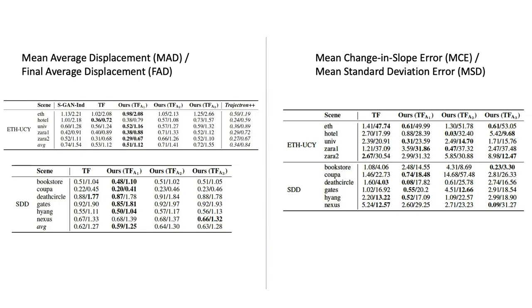We evaluated our models on distance-based metrics as well as two sets of novel angle-based metrics, and we showed that our transformer model with angle regularization outperforms previous transformer baseline models and can generate predictions that better match ground truth trajectories.